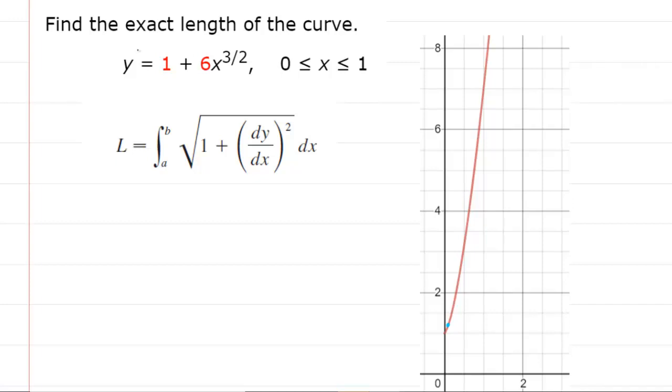Here we are asked to find the exact length of the given curve from x equals zero to x equals one. To help us visualize the problem, we've sketched the graph on the right hand side. We're going from x equals zero starting right here to x equals one, which is right up here. Our goal is to find the length of this curve.